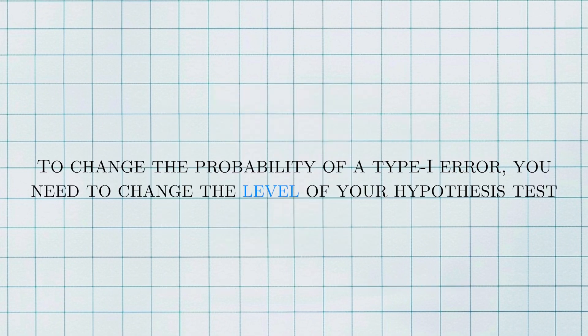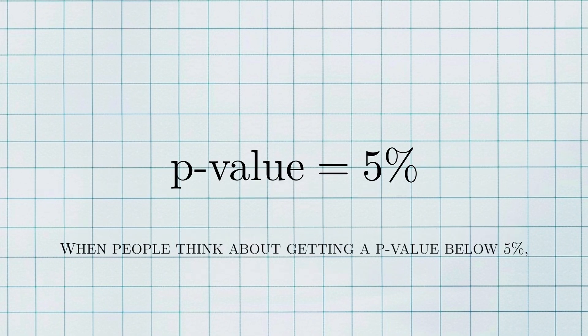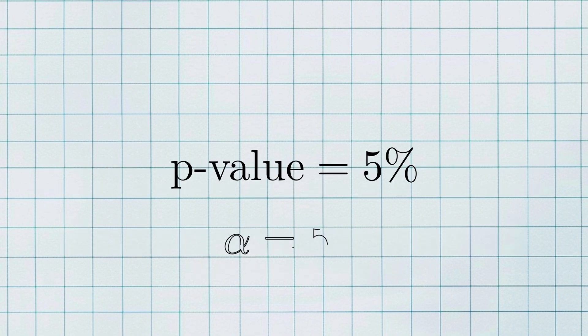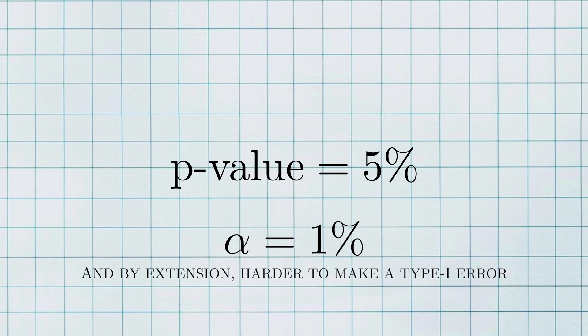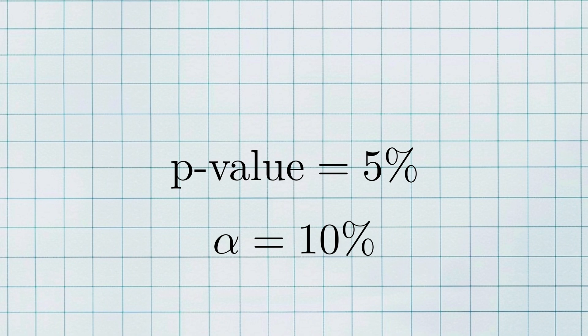To change the probability of a type 1 error for our test, you need to change the level of your test, which is usually denoted as alpha. The level is something we choose — it's a probability that we tolerate. When people think about getting a p-value below 5%, it's because a 5% level was used. You can set the level to something lower like 1%, which makes it harder to reject the null hypothesis and by extension makes it harder to commit a type 1 error. Conversely, setting the level higher to say 10% has the opposite effect.